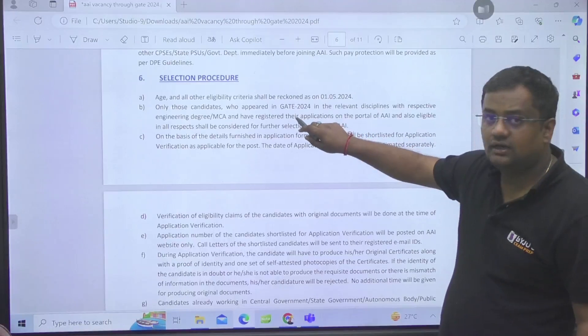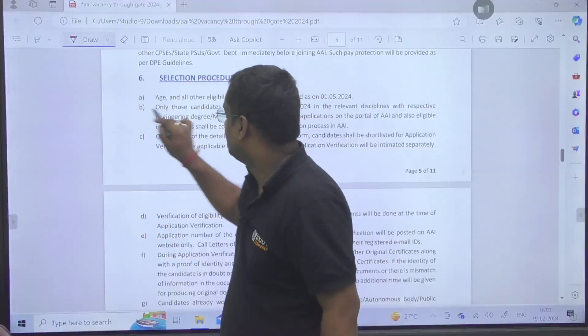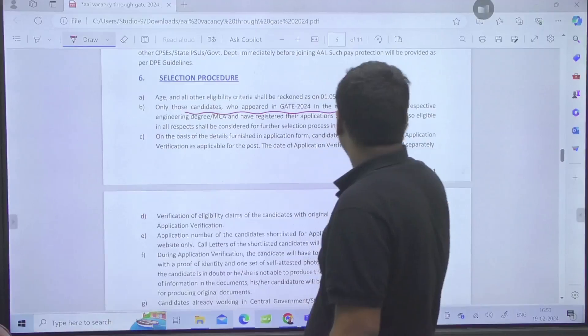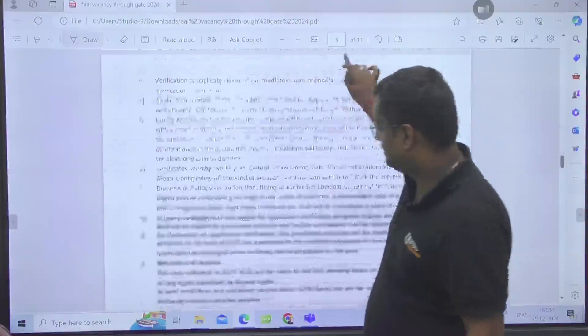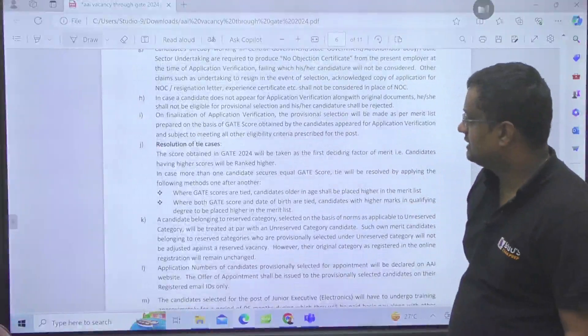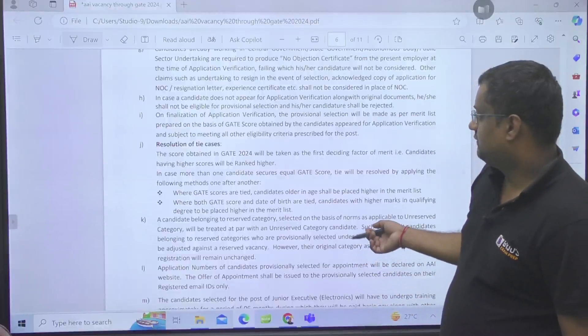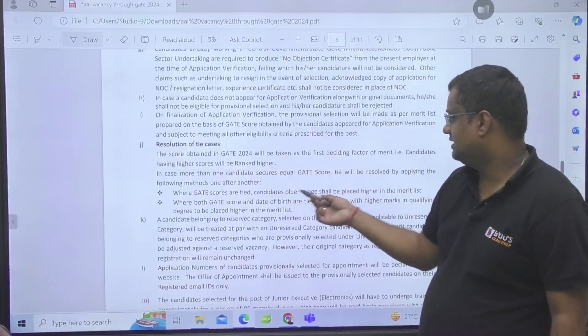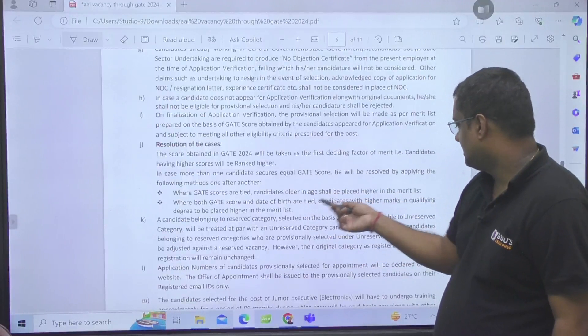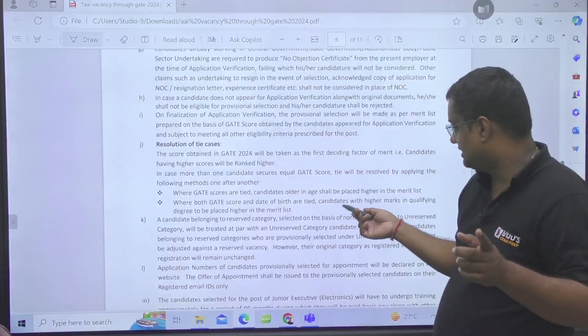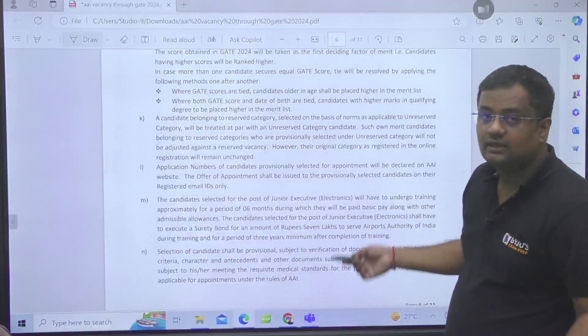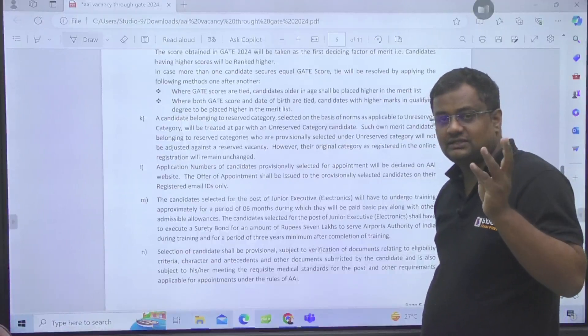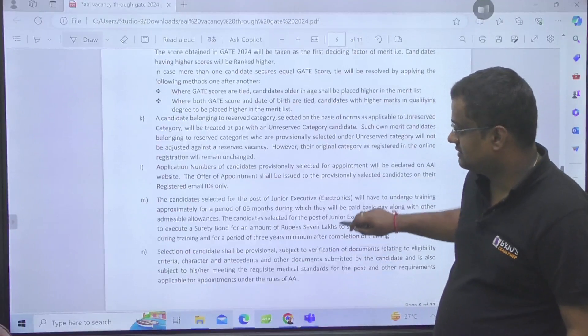Only students who have appeared in GATE 2024 will be eligible. First will be GATE score, in terms of tie older age will be preferred. If age is also tied, then the student with higher marks in qualifying degree will be placed higher.